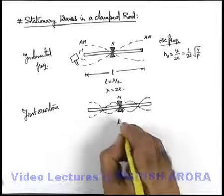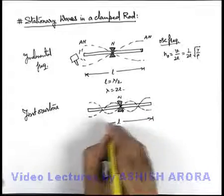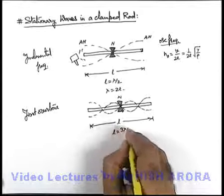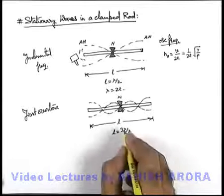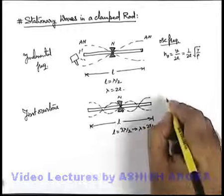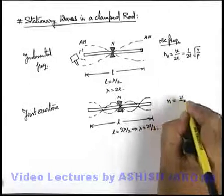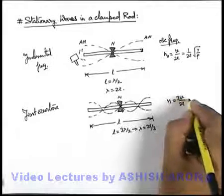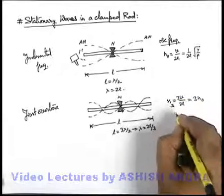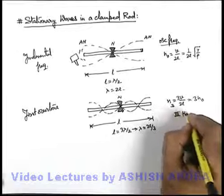In this situation, if L is its length, L can be written as 3 lambda by 2, or wavelength will be 2L by 3. The frequency is v by lambda equals v by 2L/3, which is 3 times the fundamental frequency, which can be written as third harmonic oscillation.